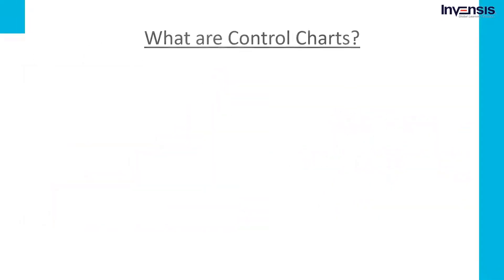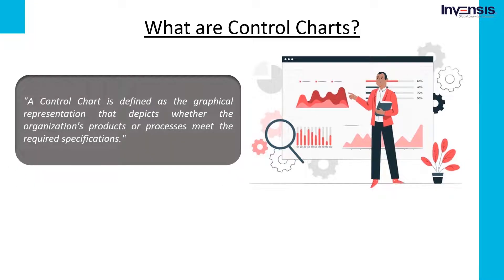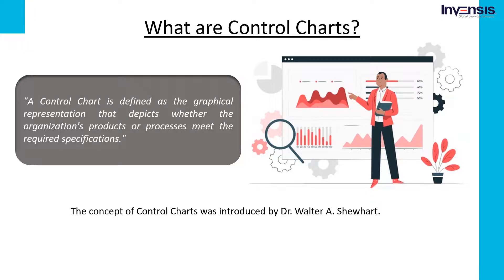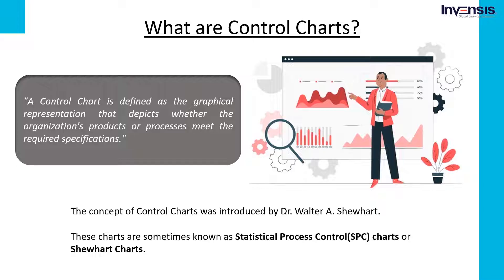A control chart is defined as a graphical representation that depicts whether an organization's products or processes meet the required specifications. The concept was introduced by Dr. Walter A. Shewhart, and these charts are sometimes known as Statistical Process Control (SPC) charts or Shewhart charts. A control chart displays all process data in a sequence and consists of a centerline, an upper limit, and a lower limit. The centerline indicates the process average, while the upper and lower limits represent whether the process is within control or out of control.